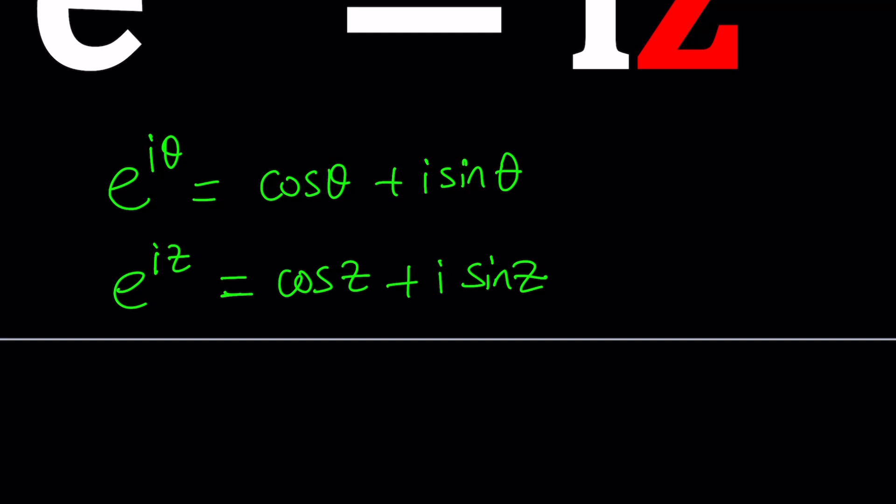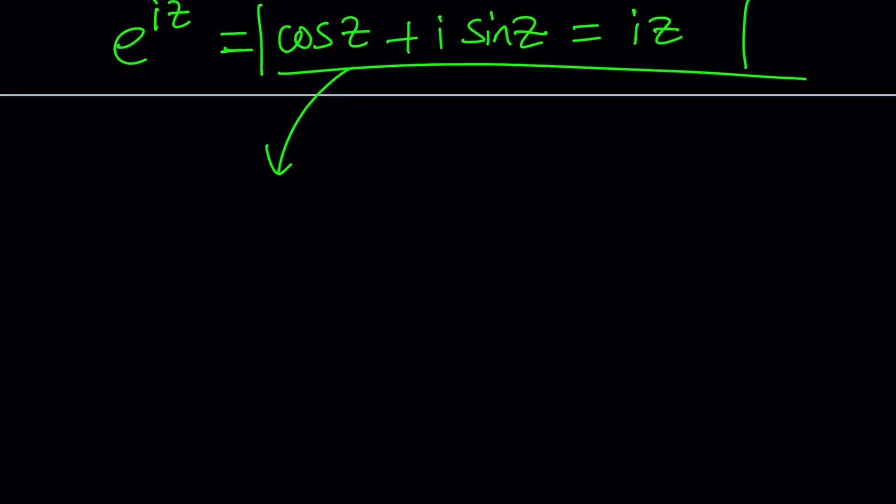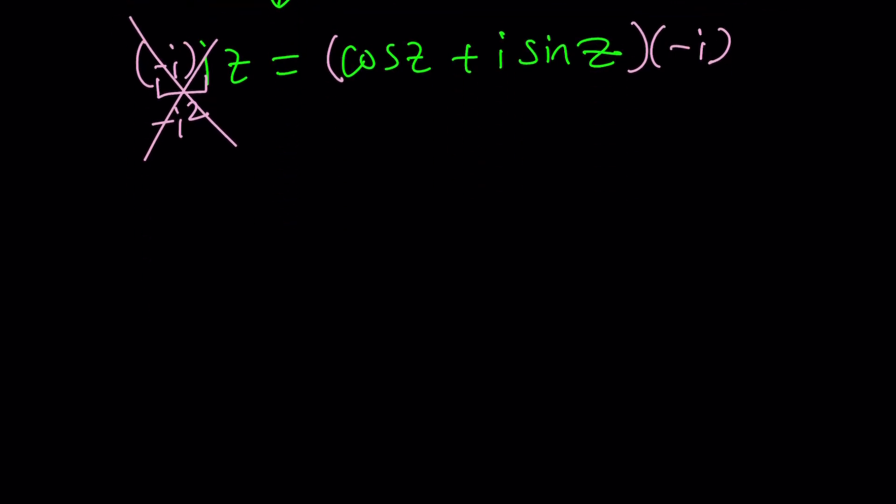E to the power iz can be written as cosine z plus i sine z. What is the cosine of a complex number? That's another story. We'll probably talk about that later in a different video. But let's go ahead and do this. Since we have e to the iz equals iz, this should equal iz. So from here, we should be able to solve for z.